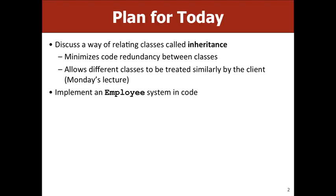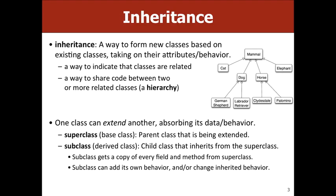Let's talk about inheritance. Inheritance is a way of relating two different classes in a way that minimizes code redundancy between the classes and allows different classes to be treated similarly by the client, which is a topic we'll come back to on Monday. We'll be implementing a series of classes that build up a system of employees — different types of employees who are all related to each other. Inheritance is a way to indicate that two classes are related and a way to share code between two or more classes in a hierarchy.